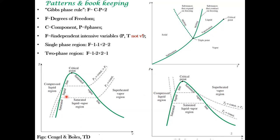It gets more interesting when you go to the three-phase region. The one-phase region is like an area in the PT plane, the two-phase region is a line, and the three-phase region — the triple point — is just a single point. At the triple point, C is one and the number of phases P is three.